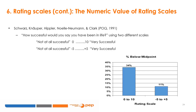Consider the numeric value of scales. Respondents were asked, 'How successful would you say you've been in your life?' using scales from 0 to 10 and from minus 5 to plus 5. In the 0 to 10 scale, 34% indicated a value between 0 and 5, while in the minus 5 to plus 5 scale, only 11% of respondents replied with a negative value.